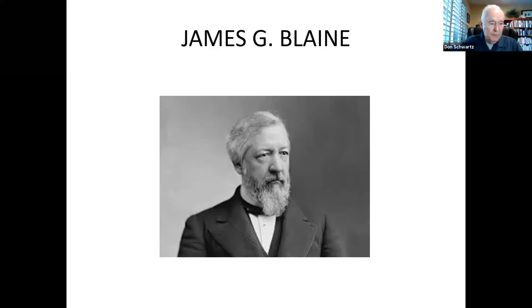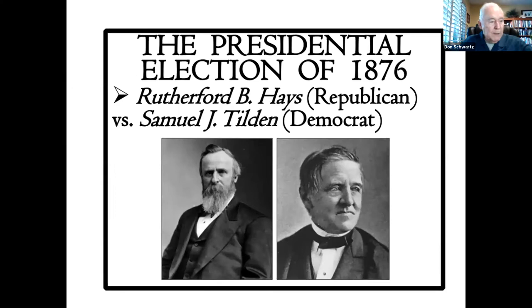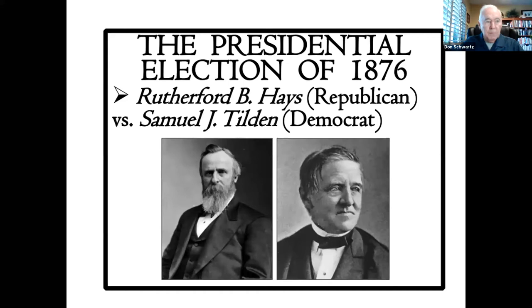On the Democrat side, the nominee was Samuel J. Tilden, who had been the governor of New York. So Rutherford B. Hayes, governor of Ohio, versus Samuel Tilden, governor of New York. Tilden was known as a reformer, and he had attracted considerable attention when he prosecuted the corrupt political boss of the New York City Democratic Party by the name of William Marcy Boss Tweed.